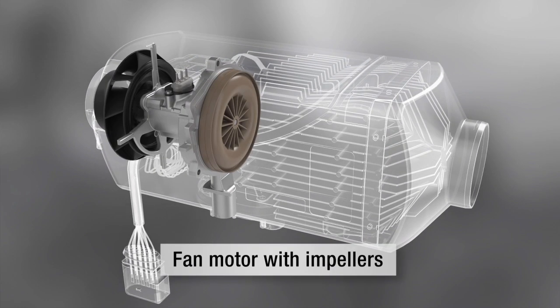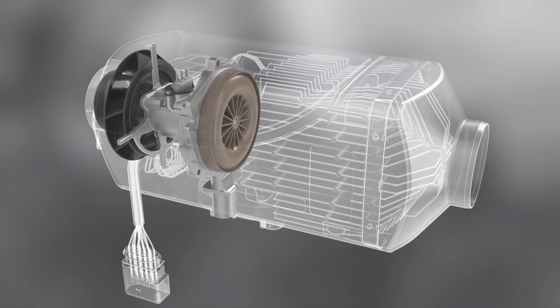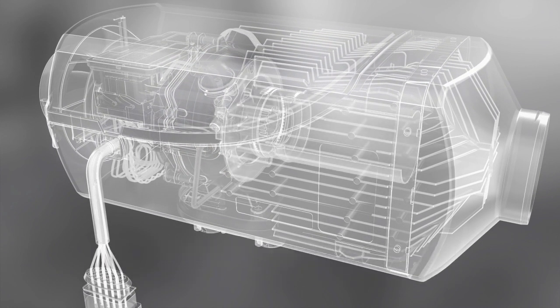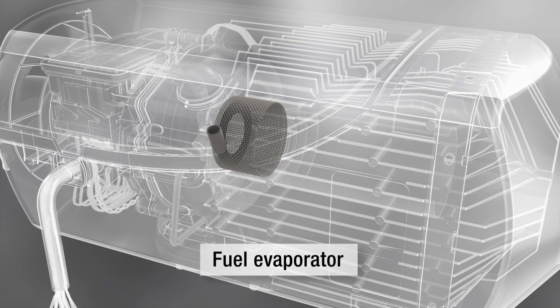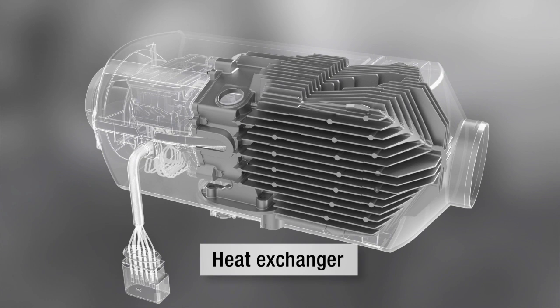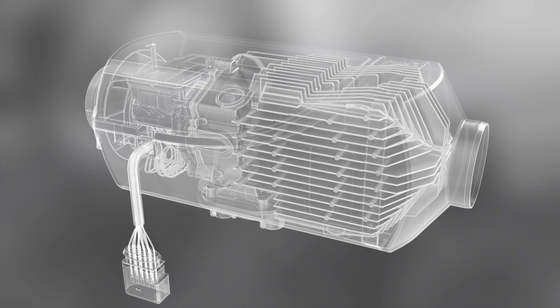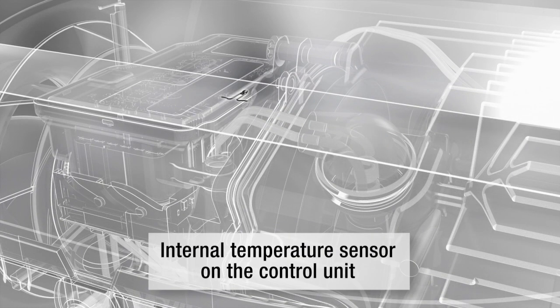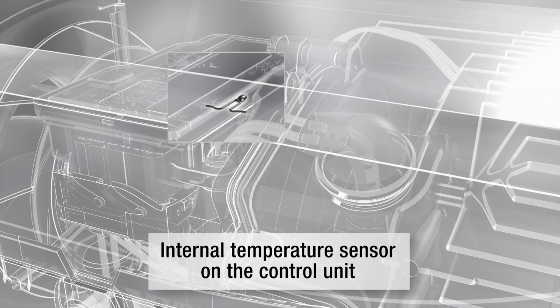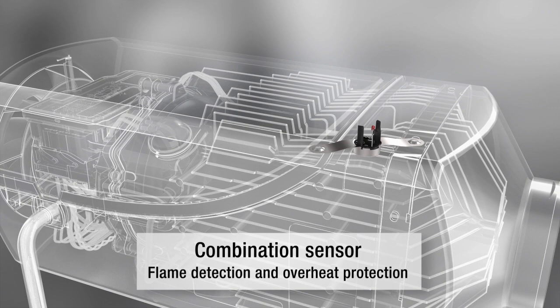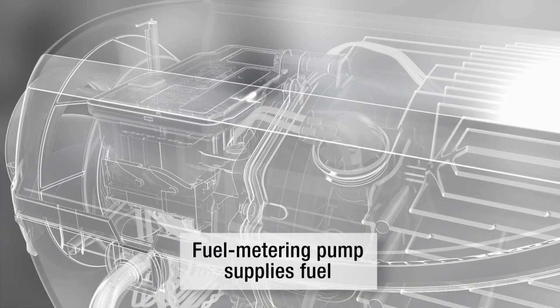The fan motor with the two impellers. The combustion chamber with the flame tube. The fuel evaporator. The glow pin. The heat exchanger. The integrated control unit. The internal temperature sensor on the control unit. The combination sensor for flame detection and overheat protection. The fuel metering pump.